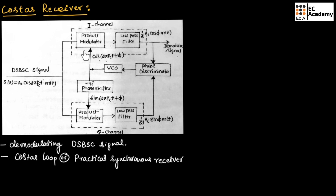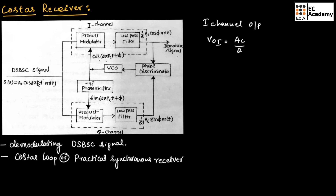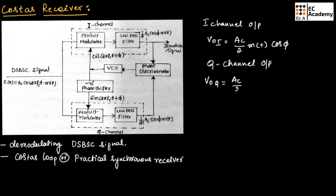The coherent detector in the upper path is referred to as the I channel or in-phase detector, and the detector in the lower path is known as the Q channel or quadrature phase detector. At the I channel, the DSBSC signal is multiplied with the local oscillator signal and passed through a low-pass filter, giving output V0I = (Ac/2)·M(t)·cos(φ). Similarly, the Q channel output is V0Q = (Ac/2)·M(t)·sin(φ).